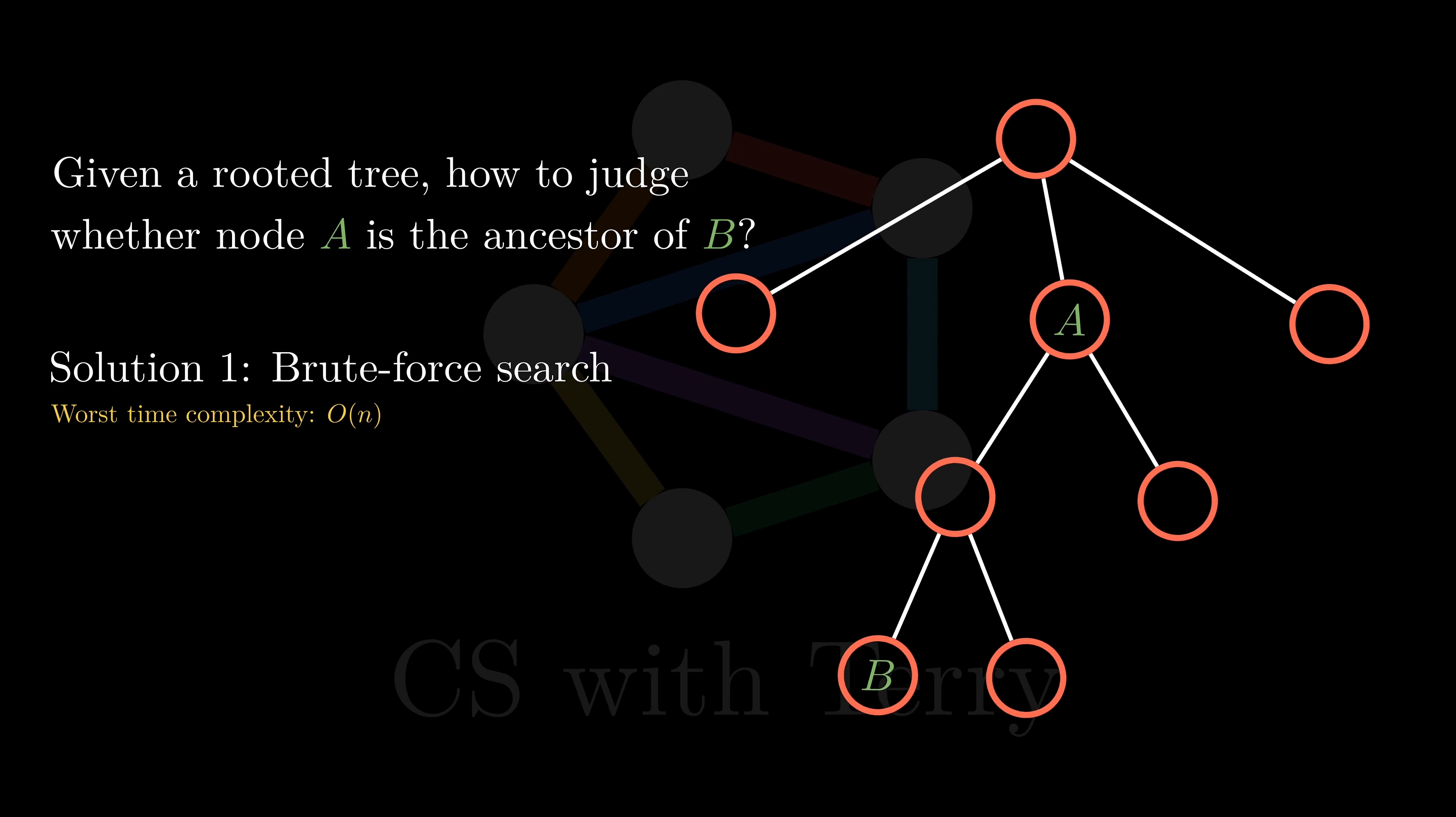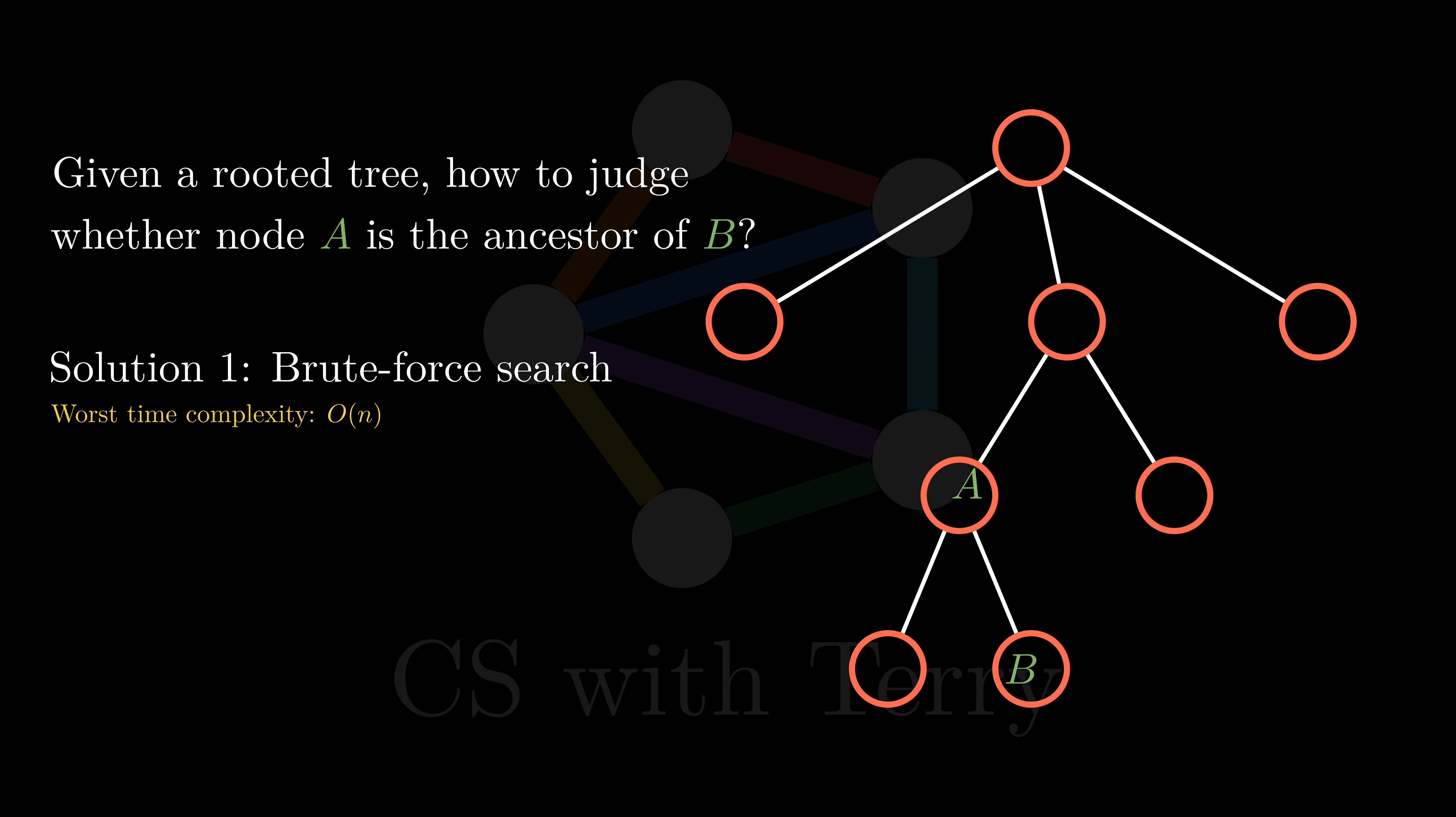So, if we need to check the relationships for different pairs of nodes on the same tree multiple times, how should we optimize it?